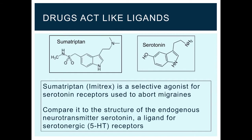So the example that I want to give you is that of sumatriptan. Sumatriptan is a selective agonist for the serotonin receptor, and it's used to abort migraines. I'd like you to compare it to the structure of the endogenous neurotransmitter serotonin. You can see that it looks very, very similar with some slight modifications. We can infer from the similarity of the drug and the ligand that they bind to similar sites on the serotonin receptor. So in this way, the drug is acting in a manner similar to the endogenous ligand.